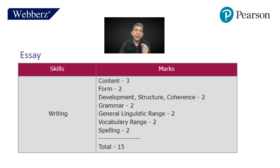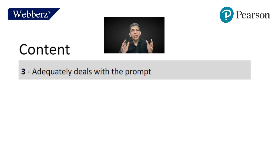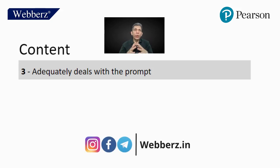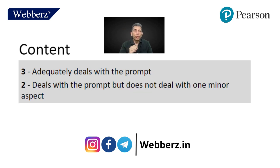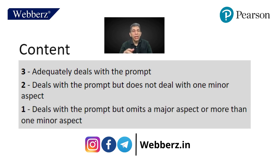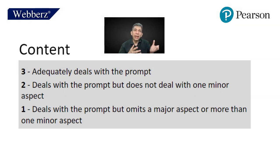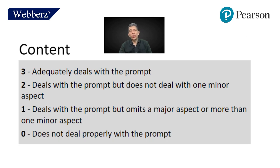Let us understand in detail what content means. A score of three means your essay adequately or sufficiently deals with the prompt — the topic of the essay. Two means it deals with the prompt but does not deal with one minor aspect. One means it deals with the prompt but omits one major aspect or more than one minor aspect. Zero means it does not deal with the prompt at all.